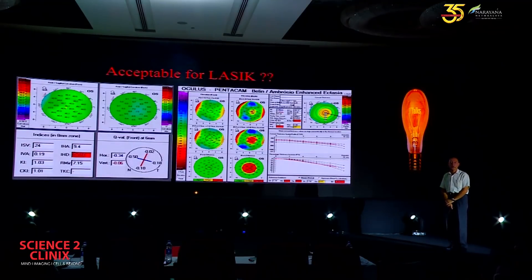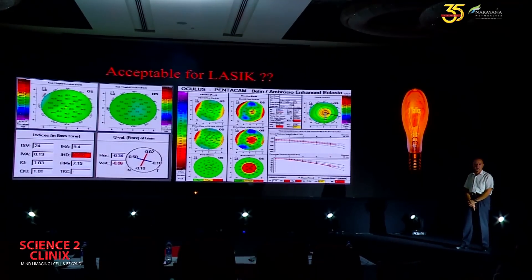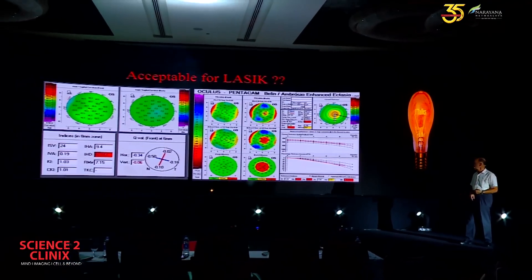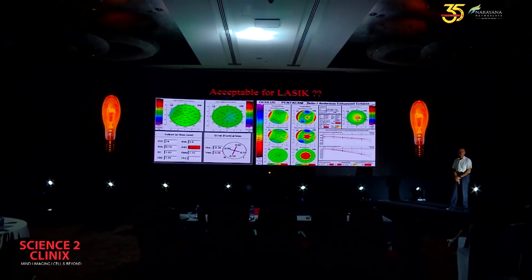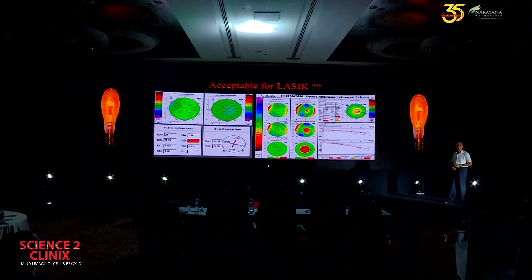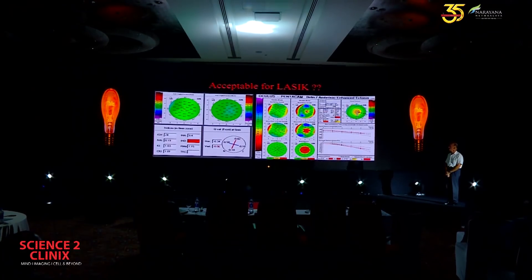The second patient had one abnormal IHD. But on the right is a very highly abnormal display — over four standard deviations outside the norm. The changes are on the posterior surface with an abnormal pachymetric progression, in spite of the fact that the anterior indices are fairly normal and the curvature maps look normal.